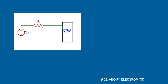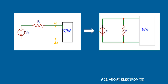Let's say we have one voltage source Vs with a series resistance R connected to some network via terminal AB. Using this source transformation, we can convert this voltage source into a current source Is with the same resistance R in parallel with this current source.